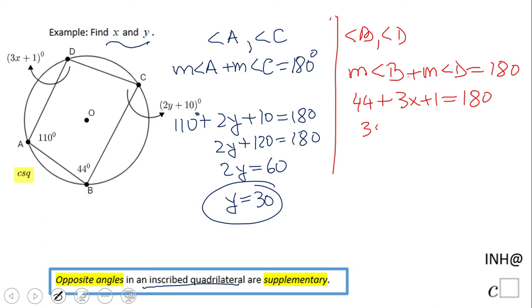3X plus 45 equals 180. We combine 44 and 1, then we're going to subtract 45 and we get 135. Then we're going to divide by 3 and end up with 45. That is how much X is.